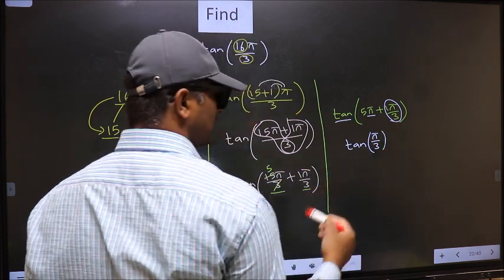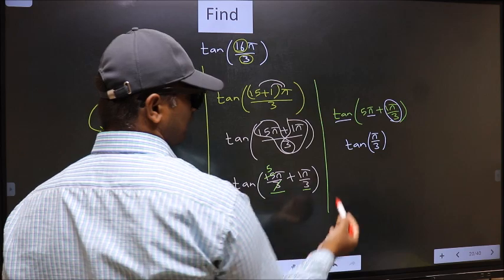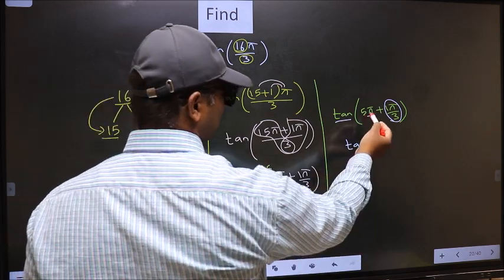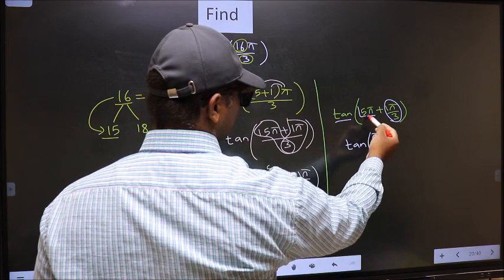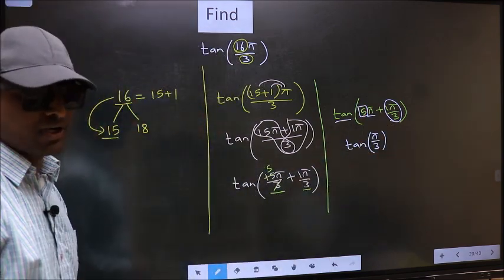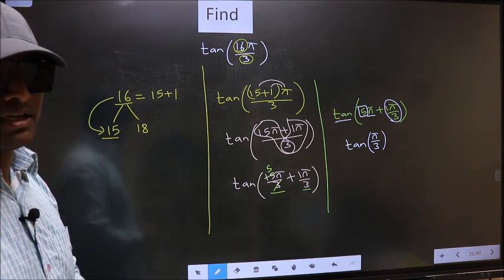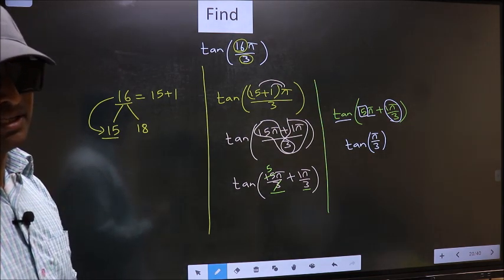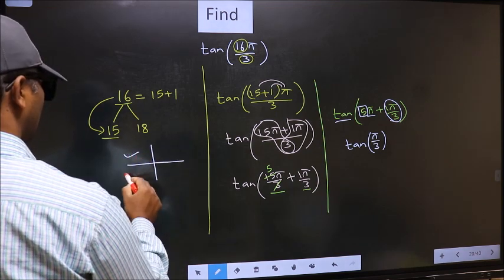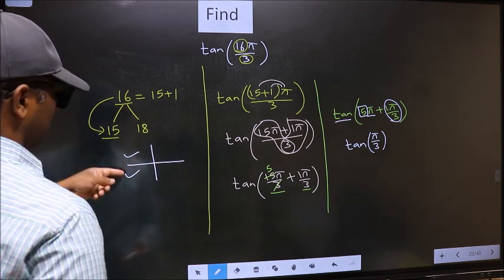Now, the question is, will we get here plus or minus. To answer that, we should look at the number before pi, which is 5. And 5 is odd. And all the odd multiples of pi, they lie either in the second or in the third quadrant.